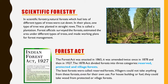In scientific forestry, natural forests which had lots of different types of trees were cut down. In their place, one type of tree was planted in straight rows. This is called a plantation. Forest officials surveyed the forests, estimated the area under different types of trees, and made working plans for forest management. They planned how much of the plantation area to cut every year.